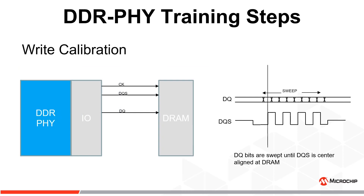The final stage of training is write calibration. In this step, the PHY writes patterns to DRAM and then reads them back. The delay values are swept in order to detect the leading and trailing edges of DQ when read back, and the midpoint of the delays is selected. DQS is now center aligned to each DQ at the DRAM.